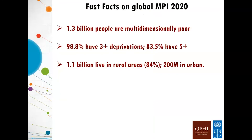Of those 5.9 billion people covered, 1.3 billion are multidimensionally poor, and 99% of them are deprived in at least three indicators, with 83.5% deprived in at least five or more indicators. The multidimensional balance of poor people's lives is really experienced in these overlapping deprivations. Of those 1.3 billion, 1.1 billion live in rural areas and 200 million in urban areas, where those definitions are taken from national definitions.